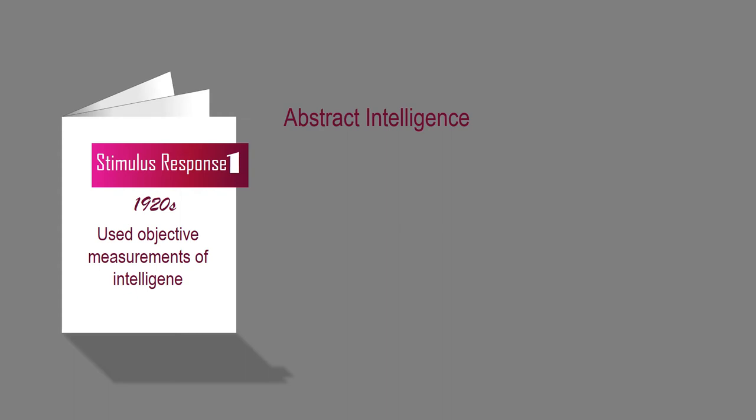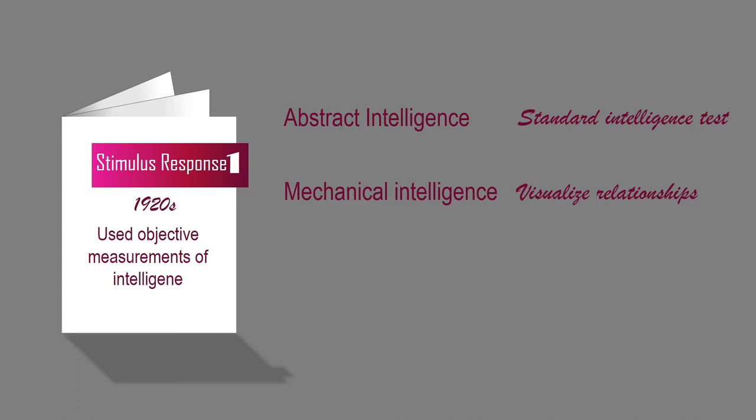Thorndike drew an important distinction among three broad classes of intellectual functioning: abstract intelligence, measured by standard intelligence tests; mechanical intelligence, which is the ability to visualize relationships among objects and understand how the physical world works; and social intelligence, which is the ability to function successfully in interpersonal situations.